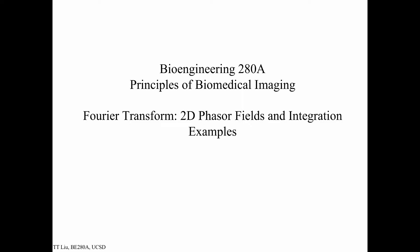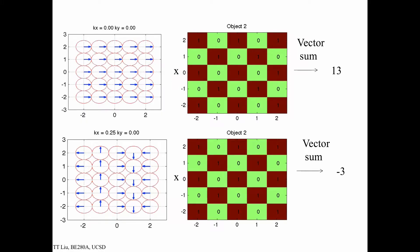In this module, we're going to take a look at a few more examples of how to understand the role of these 2D phasor patterns in the computation of the Fourier transform. Here, once again, we have a phasor pattern corresponding to kx equals 0, ky equals 0. All the phasors are pointing in the same direction because we're at the center of k-space, so there's no variation in either the x or the y direction.